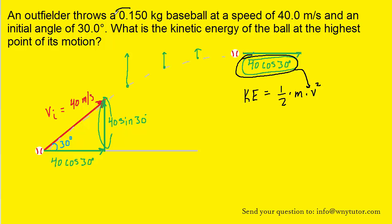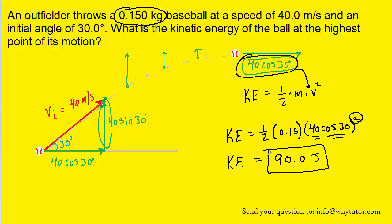So we're going to plug that in for speed, and then the mass of the baseball was given as 0.15 kilograms. So there we have the known values plugged in. Note that both the 40 and the cosine of 30 must get squared, so just be careful when you type that into your calculator. And when you do that, you should get a kinetic energy exactly equal to 90.0 joules. And that is indeed the correct answer.